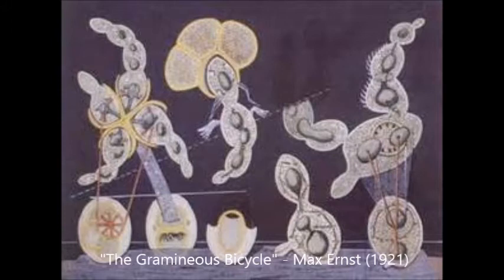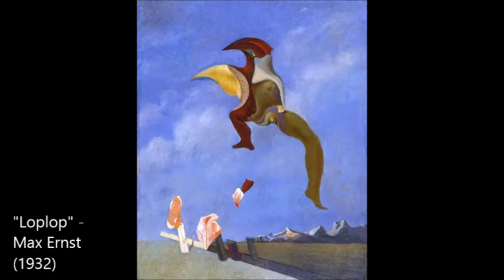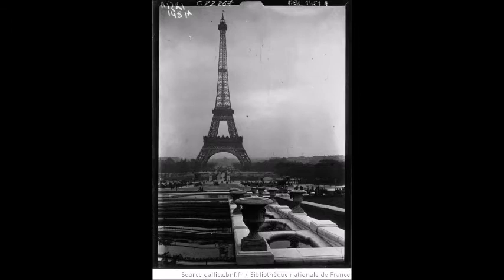Ernst reworked mundane materials and had an alter ego called the Lop-Lop — a kind of bird-man — because when he was a child, he was confused about the relationship between birds, humans, and death. The Lop-Lop is incorporated into many of his paintings in weird, distorted images. Ernst became one of the Surrealist movement's founding members after fleeing to Paris in 1922 following World War I. He later escaped fascism and the internment camps in France, fleeing to the U.S. in 1941. In New York City, along with other European Surrealists, he began to inspire the emergence of abstract expressionism.